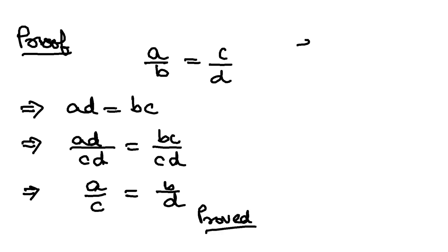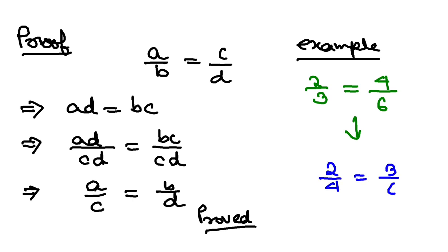If I take an example, if you have 2/3 equals 4/6, then by alternendo you will have 2/4 equals 3/6. It is an example of alternendo.